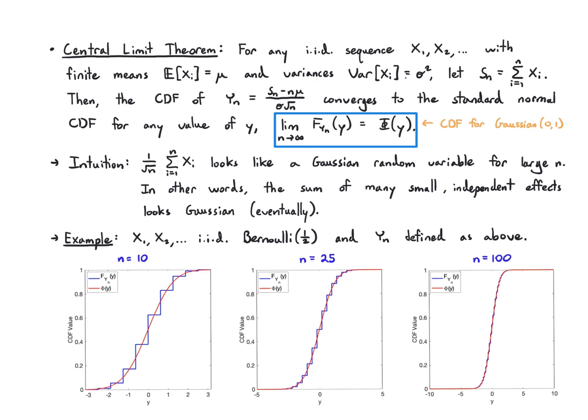And this is a lot more general than I've written here, so you can relax some of these assumptions. You could allow for different means and variances, you could allow for weak dependence between some of the random variables. As long as you normalize and account for those effects properly, you can still get a central limit theorem, although all those extensions I mentioned are beyond our scope.